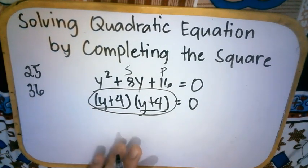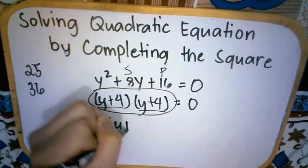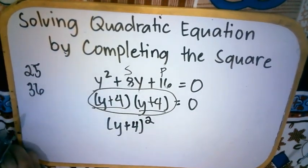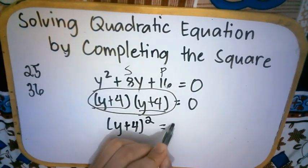Then, pwede pa natin itong isimplify by writing it this way. Y plus 4 squared is equal to 0.